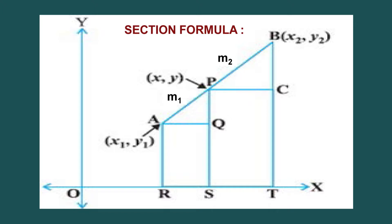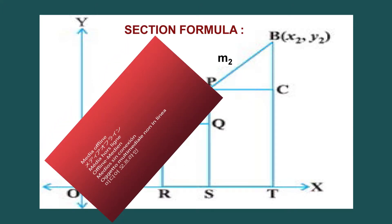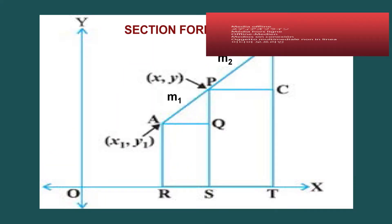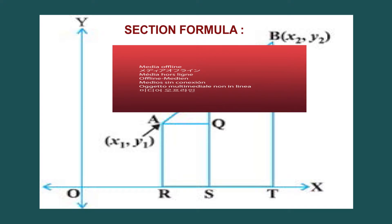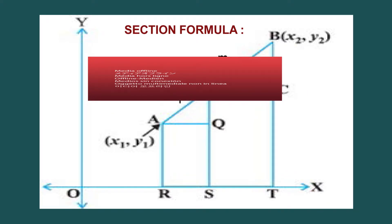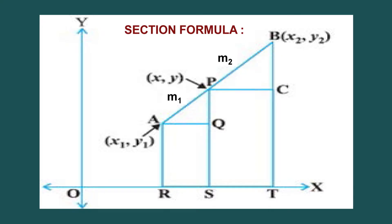Observe the diagram. In the coordinate plane, the point A(x1, y1) and the point B(x2, y2). It is the line segment AB, and the point P(x, y) divides the line segment AB in the ratio M1 is to M2. Now, we find out the coordinates of P which divides the line segment AB in the ratio M1 is to M2 internally.